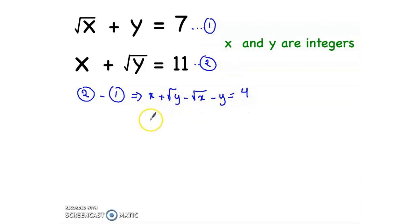Now let's arrange them. So x minus y plus radical y minus radical x equals 4. But we know that x is equal to radical x squared, and y equals radical y squared.